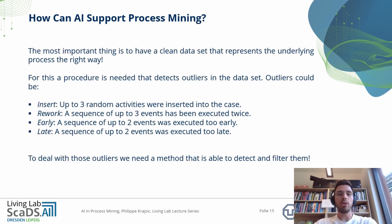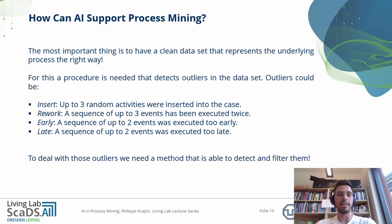The most important thing is to have a clean dataset that represents the underlying process the right way. For this, a procedure is needed that detects outliers in the data. Outliers could be, for example: insert — up to three random activities were inserted into the case; rework — a sequence of up to three events has been executed twice; early — a sequence of up to two events was executed too early; and late — a sequence of up to two events was executed too late. We could have more different kinds of anomalies, but those are just examples.